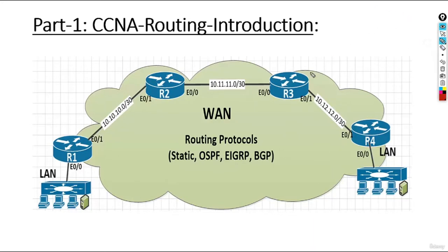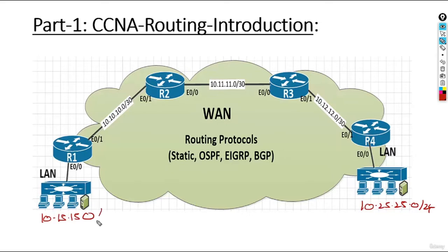When you look at this diagram, we are going to see four routers: Router 1, Router 2, Router 3, and Router 4. Routers are connected to different network segments. Router 2 is connected to the 10.10.10.0 network and also to the 10.11.11.0 network. We also have a LAN at 10.15.15.0 and another LAN at 10.25.25.0 /24. If you want to make two LANs talk to each other, they use a WAN — Wide Area Network — while LAN stands for Local Area Network.